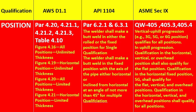In API 1104 para 6.2.1 and 6.3.1, for single qualification, the welder shall make a weld in either the rolled or fixed position. For multiple qualification, the welder shall make a weld in the fixed position with the axis of the pipe either horizontal or inclined from the horizontal. This is the key difference between single and multiple qualification.